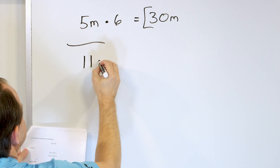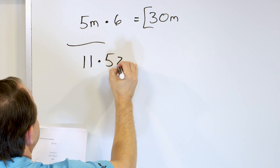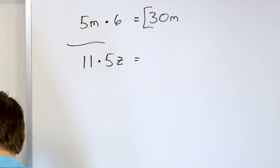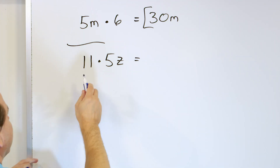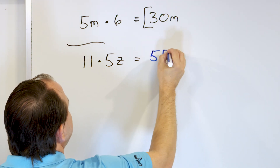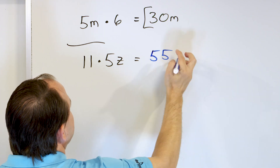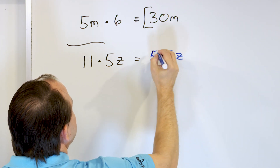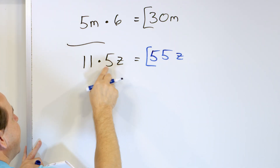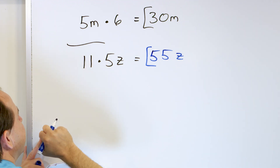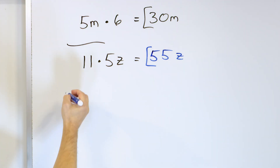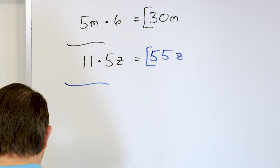What about 11 times 5z, or 5 zebras? We multiply the numbers: 11 times 5 is 55, and the variable just comes along for the ride. If I had 5 zebras and then multiplied that amount times 11, I would have 55 of these things called zebras. That would be the final answer: 55z.